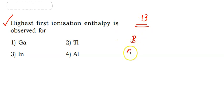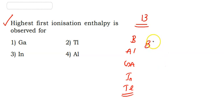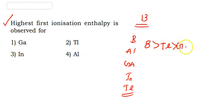The 13th group elements are: Boron, Aluminium, Gallium, Indium, Thallium. The first ionization enthalpy and the third ionization enthalpy are very important for these elements.